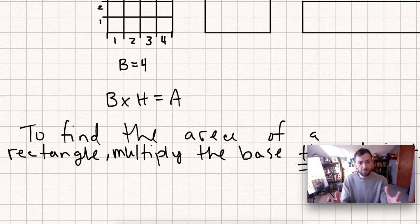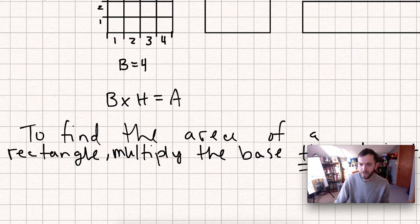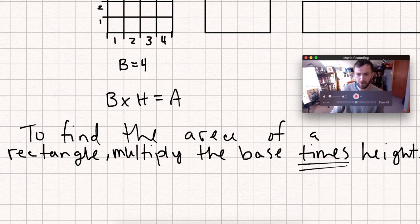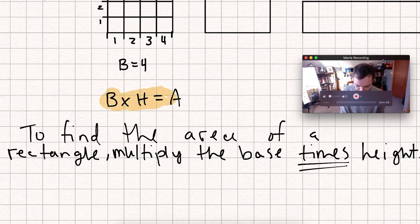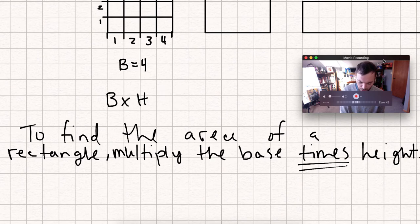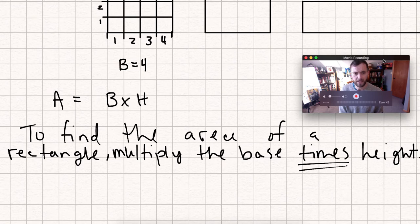Or we can write that down with this kind of shorthand here. Let me make sure you can see that. There we go. Multiply the base times height. Make sure you have that in your notebook, that note there. And we can also use this equation here to show that idea. Area equals base times height. A equals B times H.